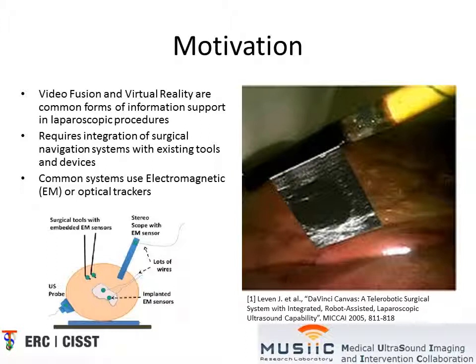To actively overlay the ultrasound image in the endoscopic camera view, a surgical navigation system must first be integrated with existing tools and devices. The figure shown in the bottom is a common system that uses an electromagnetic tracker. A disadvantage of using such a system is that there are many wires and electromagnetic sensors causing clutter at the surgical site.